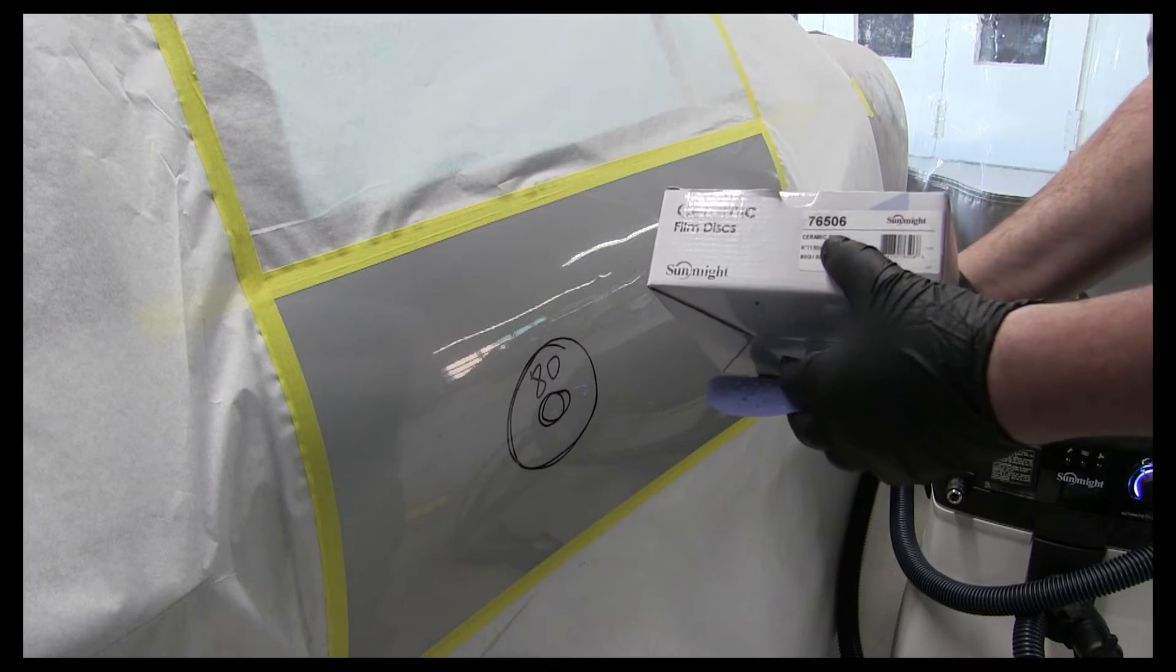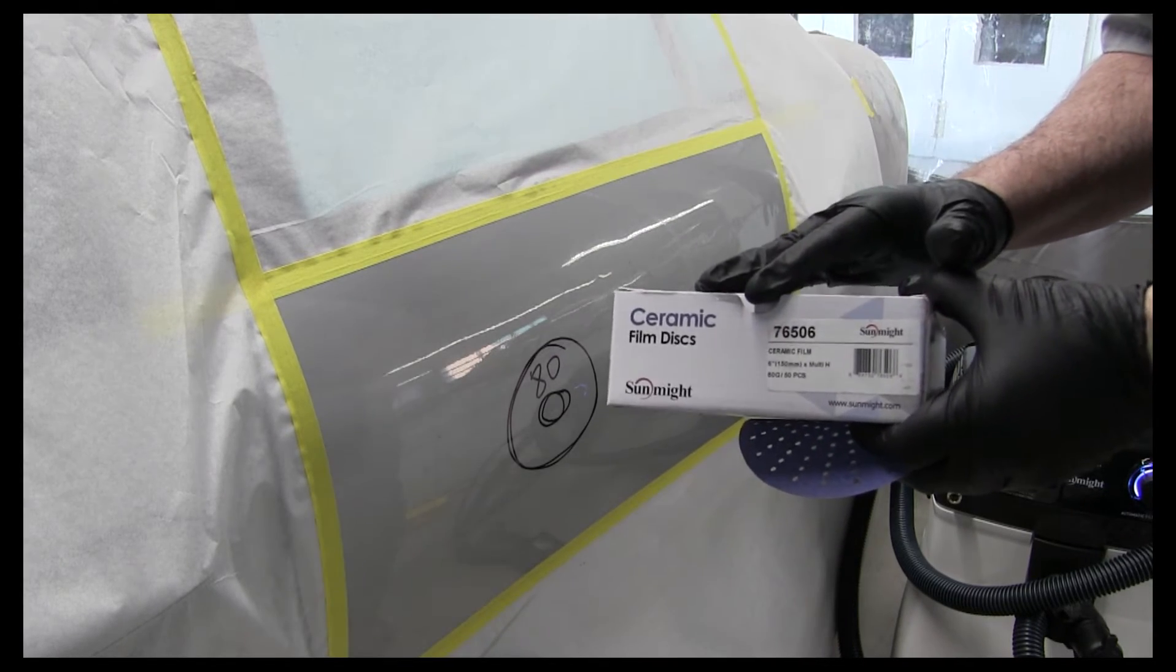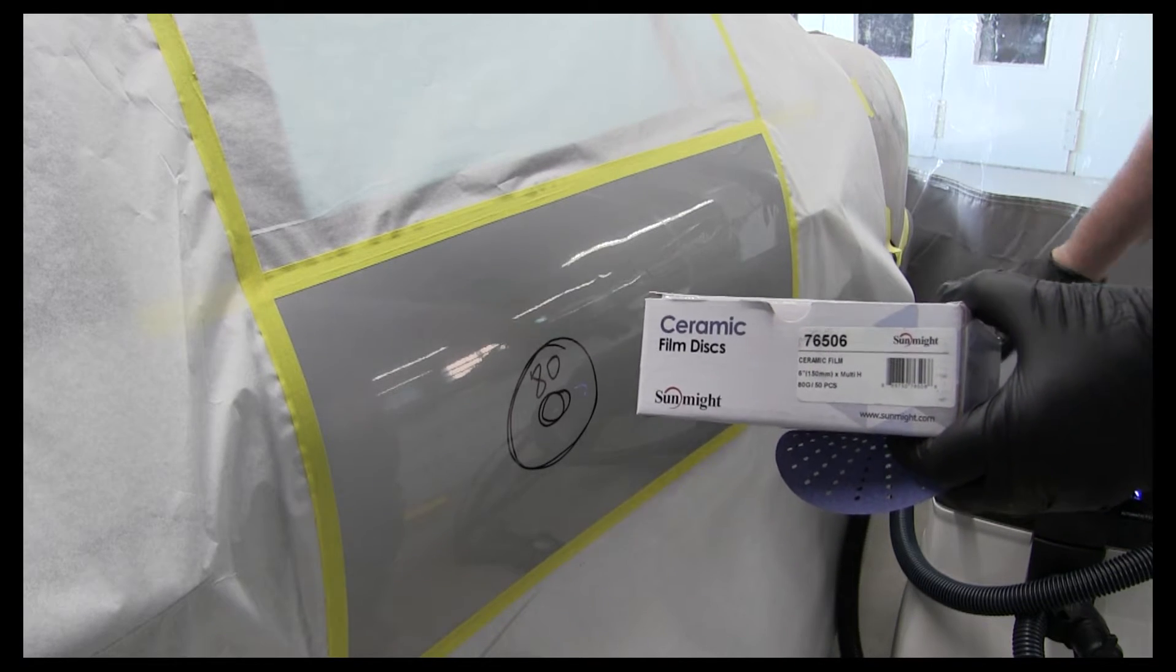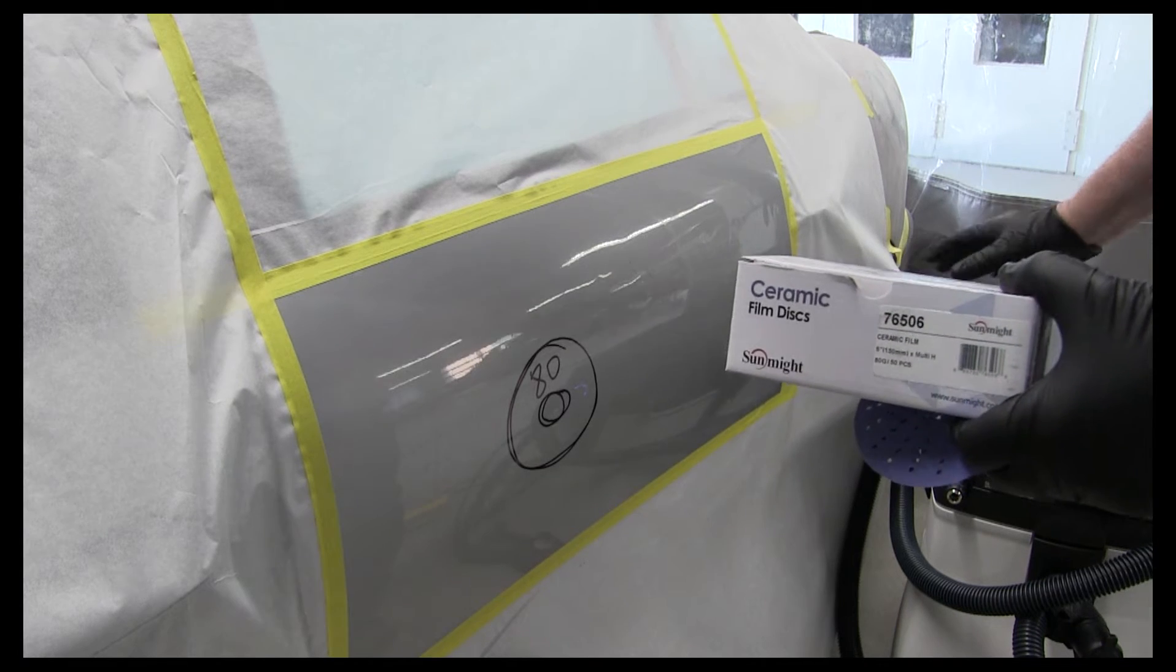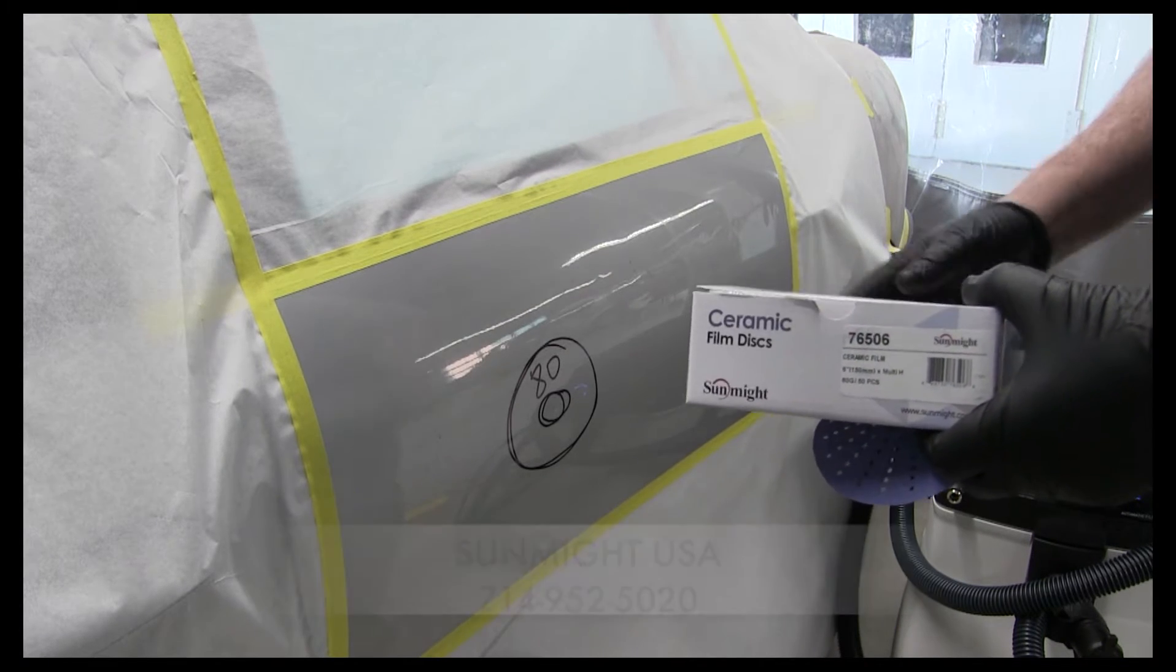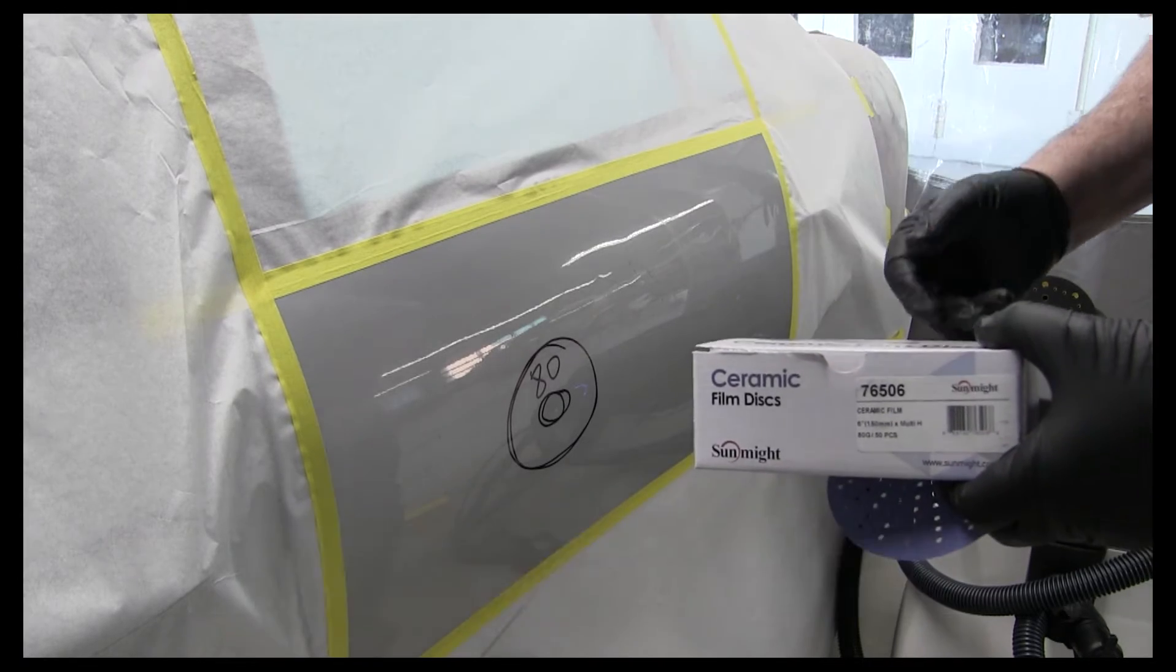This is the ceramic 80 grit right here, and I know you can find some of these on Amazon. The vacuum system is brand new. If you're interested in that, I'll put the company's information down in the description below, and you can call them directly.